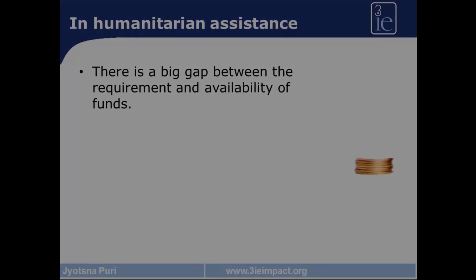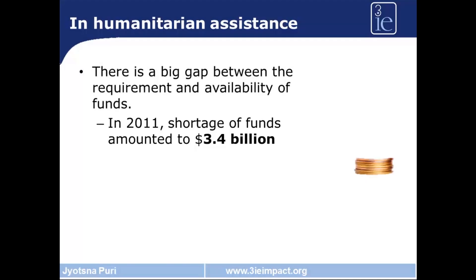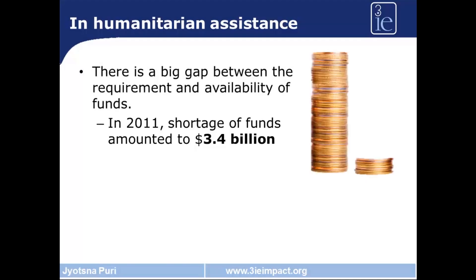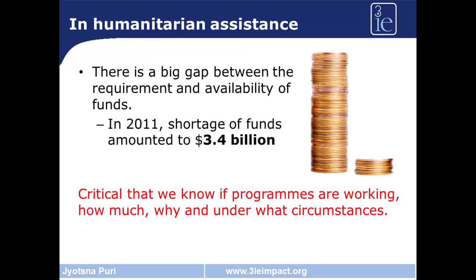In humanitarian assistance, keeping this in mind, there is a huge gap between what has been traditionally provided by donors and what is available. In the humanitarian effectiveness review undertaken by DFID in 2011, we found there was a shortfall of almost $3.4 billion. This makes it even more important to understand which programs work, why, under what circumstances, and how much.